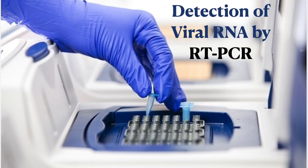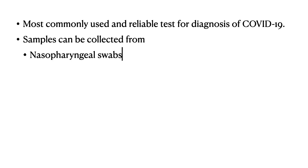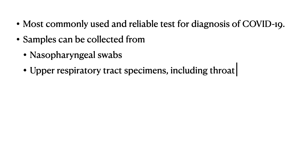Coming first to the detection of viral RNA by the RT-PCR — it is the most commonly used and reliable test for diagnosis of COVID-19, and has been used from the start of the infection. Samples can be collected from the nasopharyngeal swab, upper respiratory tract specimens including throat swabs, endotracheal aspirates, sputum, and recently it has also been tried from saliva.